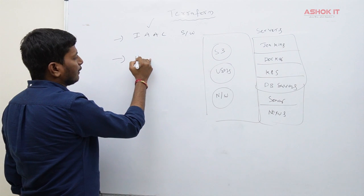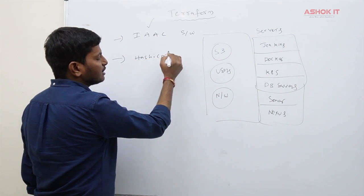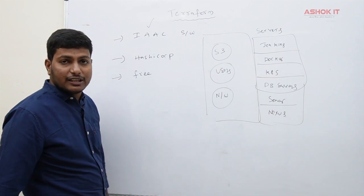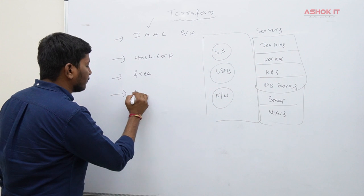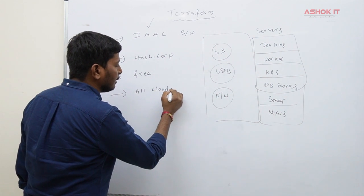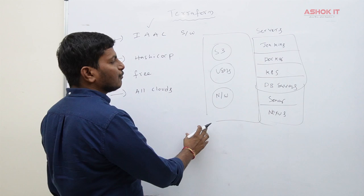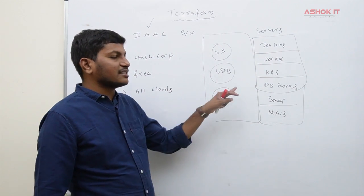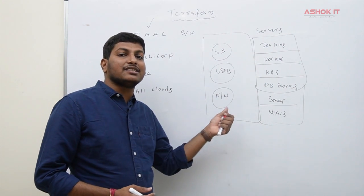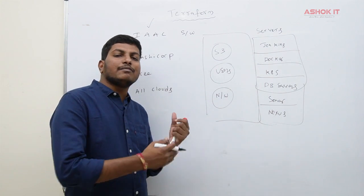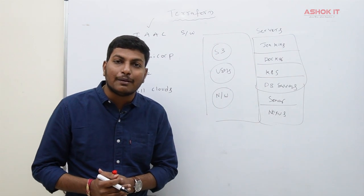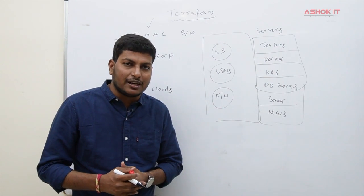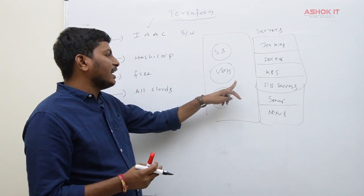Terraform is developed by a company called HashiCorp. Terraform is free software. Terraform supports all clouds available in the market. By using Terraform you can create infrastructure in AWS, Azure, or GCP. Terraform supports almost all cloud platforms available in the market, and with it we can automate infrastructure provisioning.